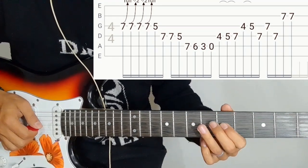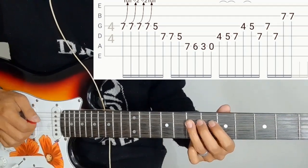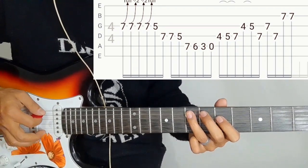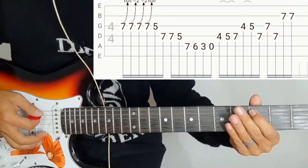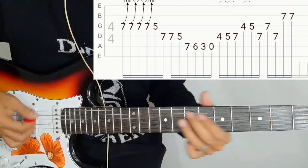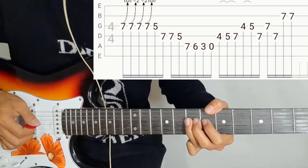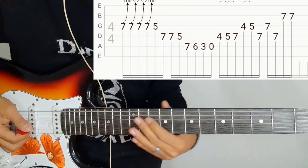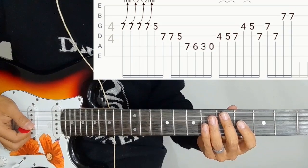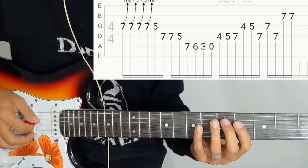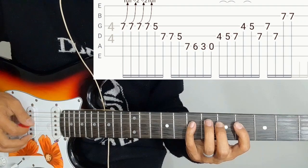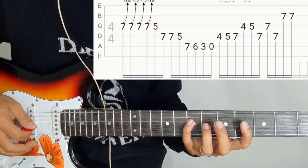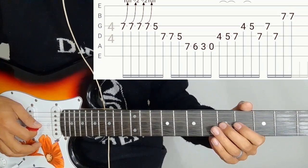On the fifth string, play frets 7-7-7-5, then 5th string 7-6-5-3. Then hammer-on on the 4th string, 4-5-7. Next the 3rd string 4-5, hammer on 4th string 7, 3rd string 5.